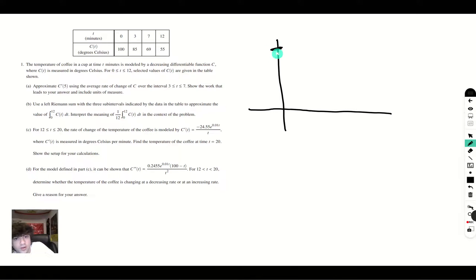We're given four data points. At the beginning we have a data point at 100. When three minutes pass, we have a data point at 85. When seven minutes pass, we have a data point at 69. And when 12 minutes pass, we have a data point at 55. So there we go. Here are four data points.